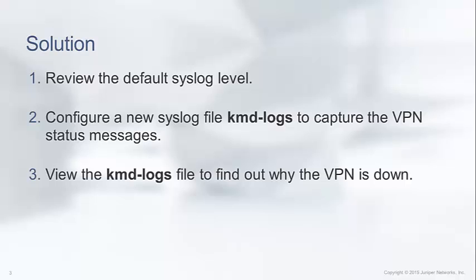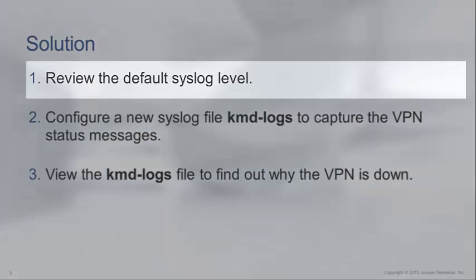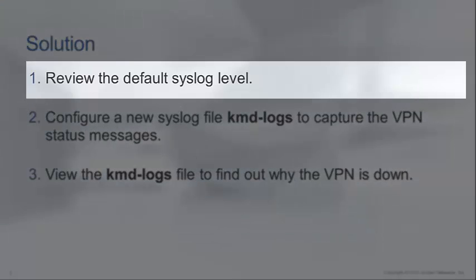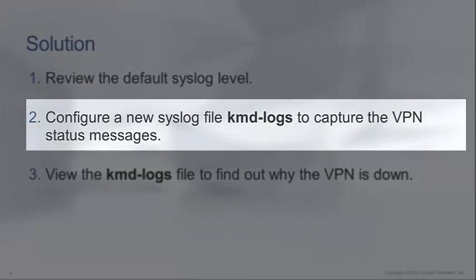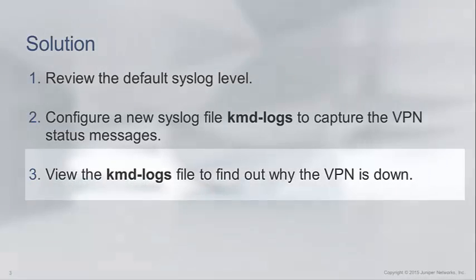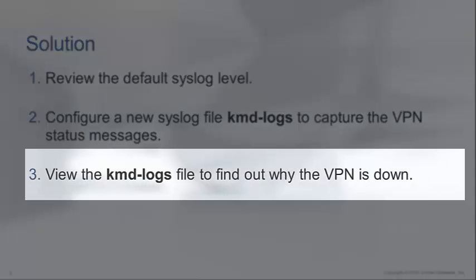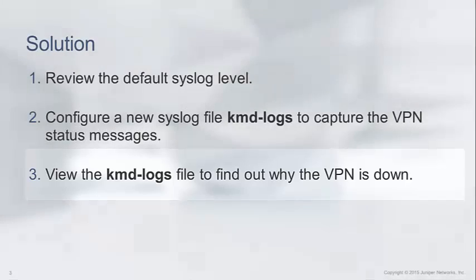There are three parts to your solution. We will first review the default syslog level. Then we will configure a new syslog file — this will be called KMD logs and will capture the status messages for VPN events. Finally, we will view the KMD logs file to see that status messages are being received, so we can find out why the VPN is down.